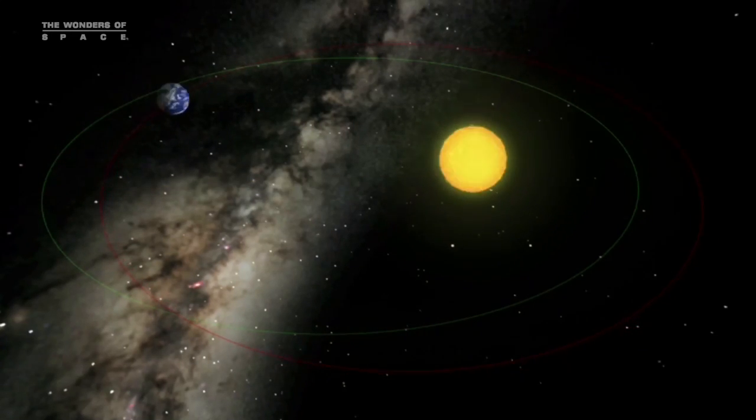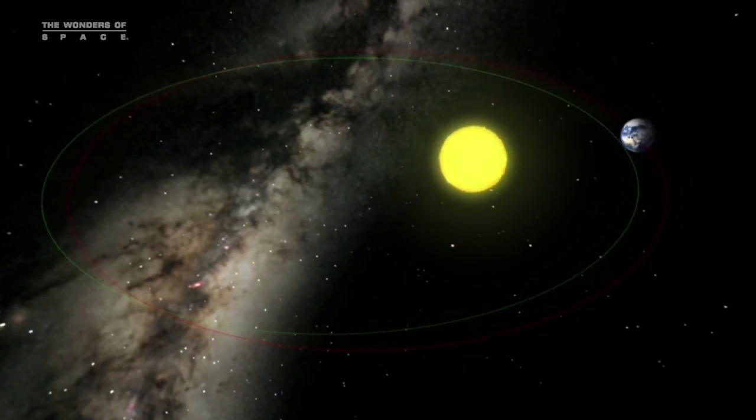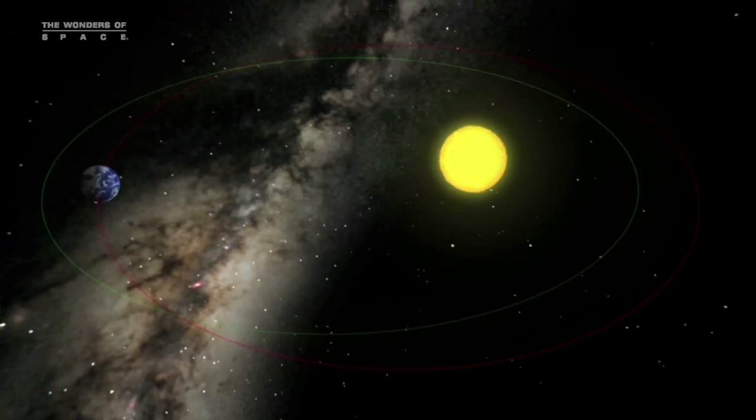As the Earth travels in its orbit, the duration of seasons depends on the eccentricity of the orbit. When the orbital eccentricity is extreme, the seasons that occur on the far side of the orbit are substantially longer in duration.